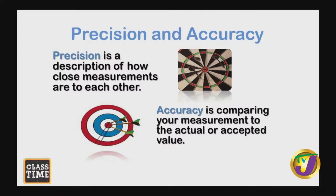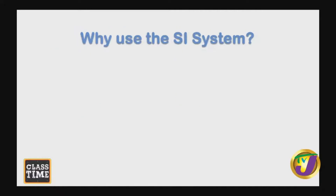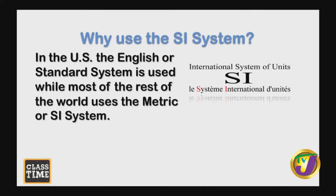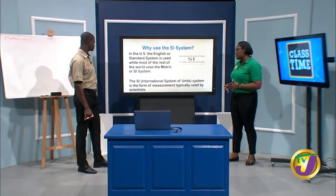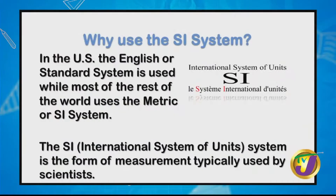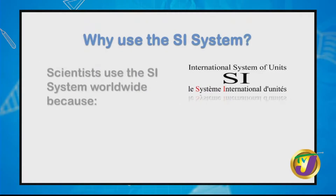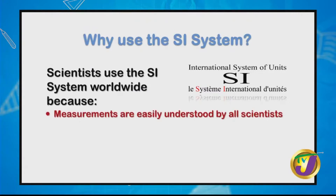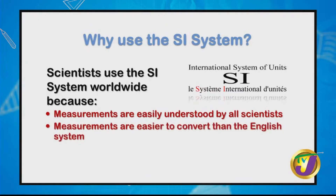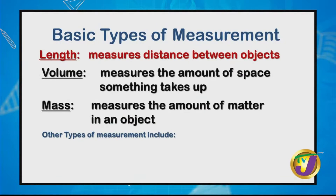In the US, the English or standard system is used, while most of the rest of the world uses the metric system, also called the SI system — the International System of Units. Scientists use the SI system worldwide because measurements are easily understood by all scientists. The SI system is also easier to convert than the English system, and it provides standardization.